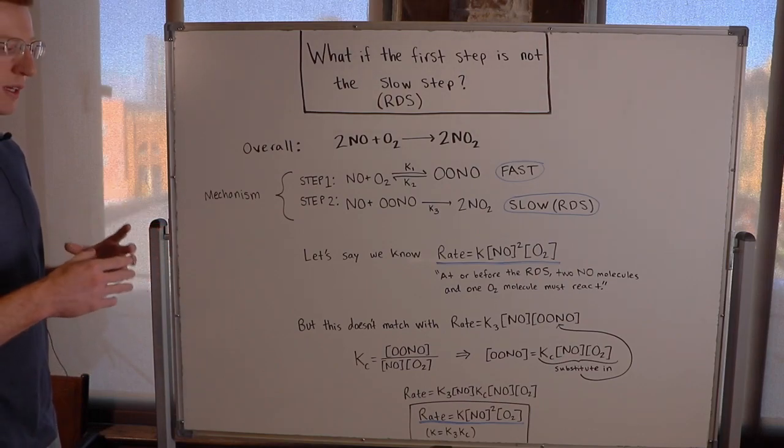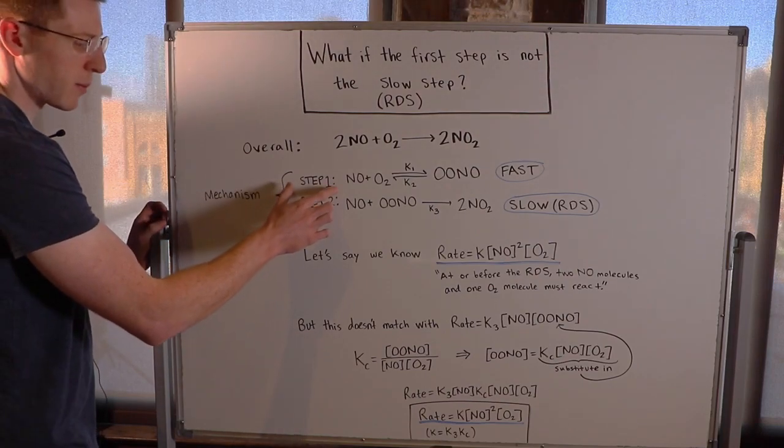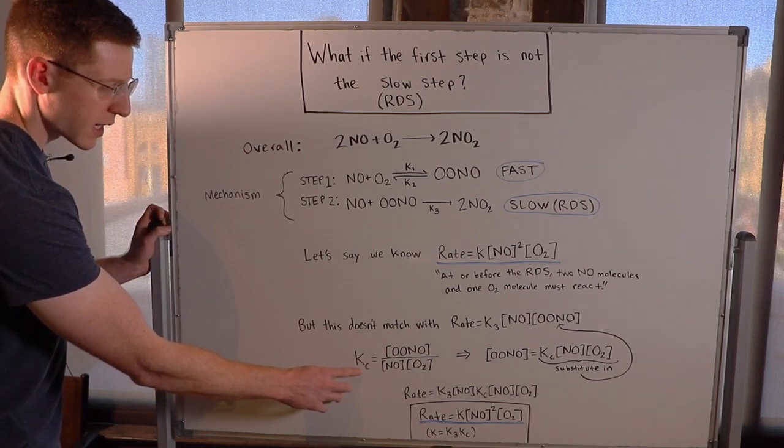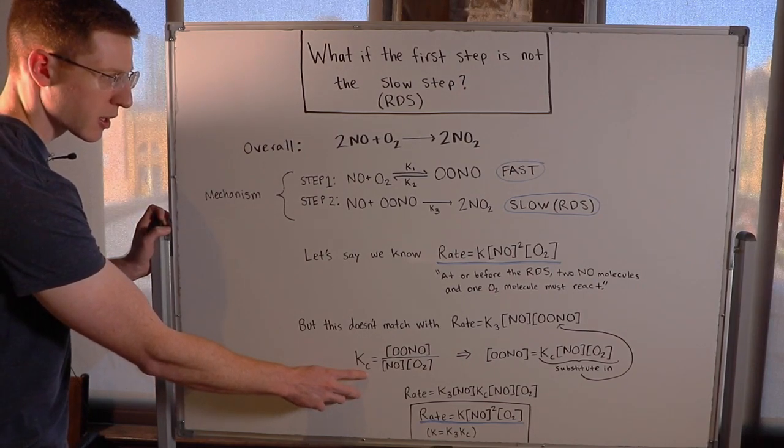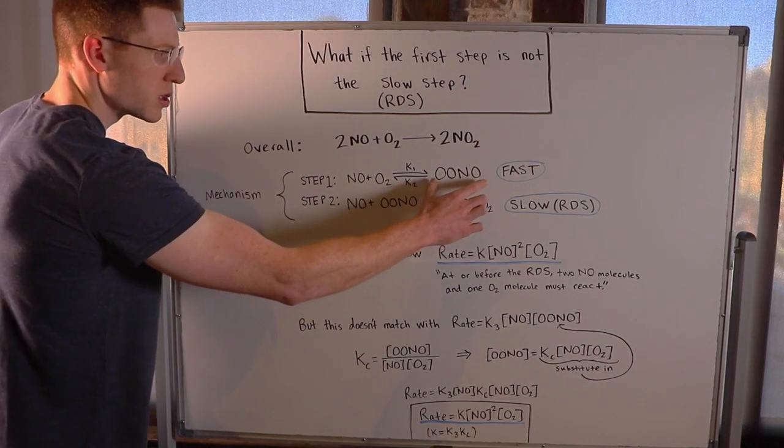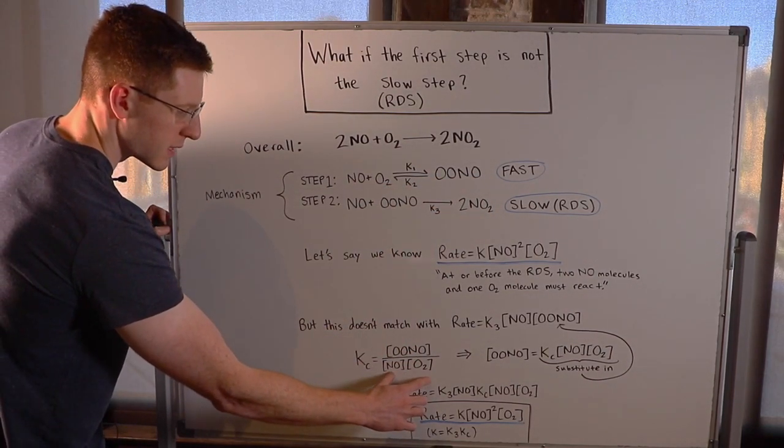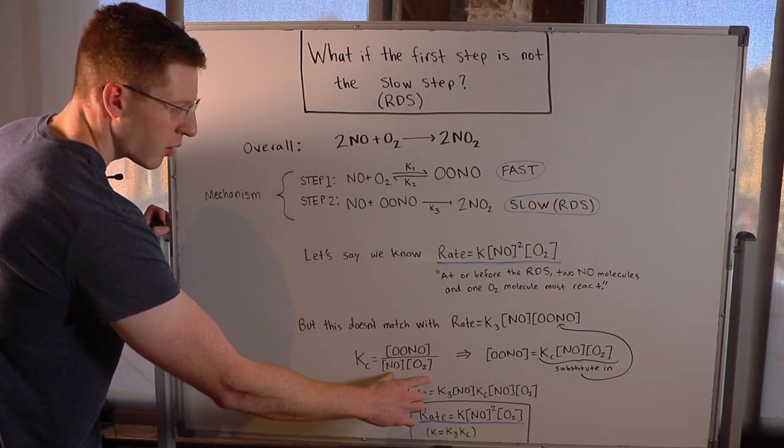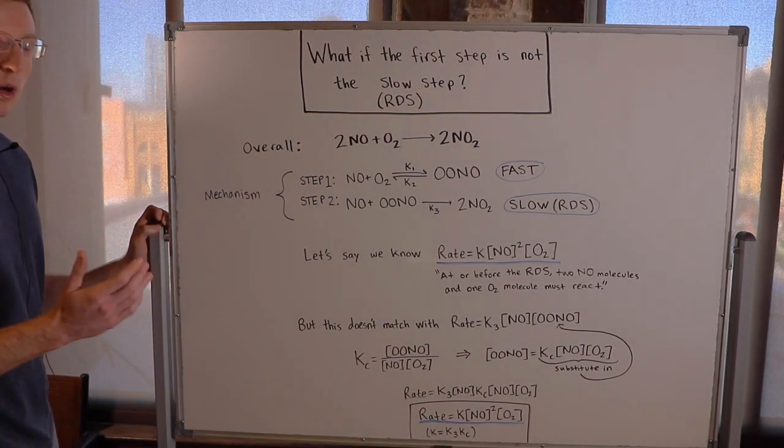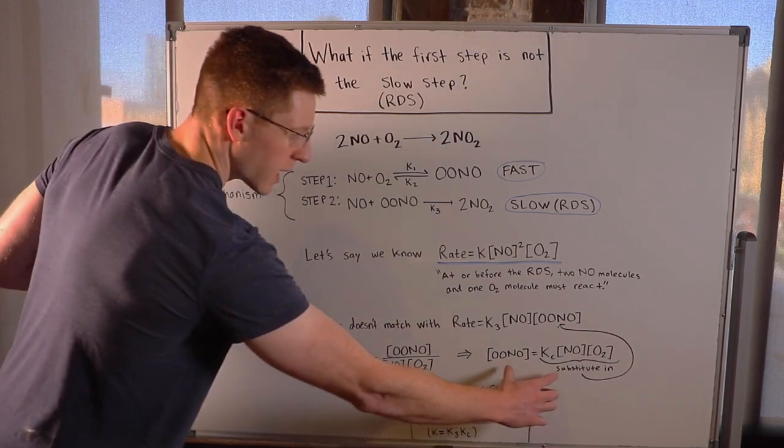So we can actually set up an equilibrium expression for step 1. And I've done that right here. I said Kc, the equilibrium constant, is equal to the concentration of the products over the concentration of the reactants multiplied together. And if you solve for the concentration of OONO here, you get this.